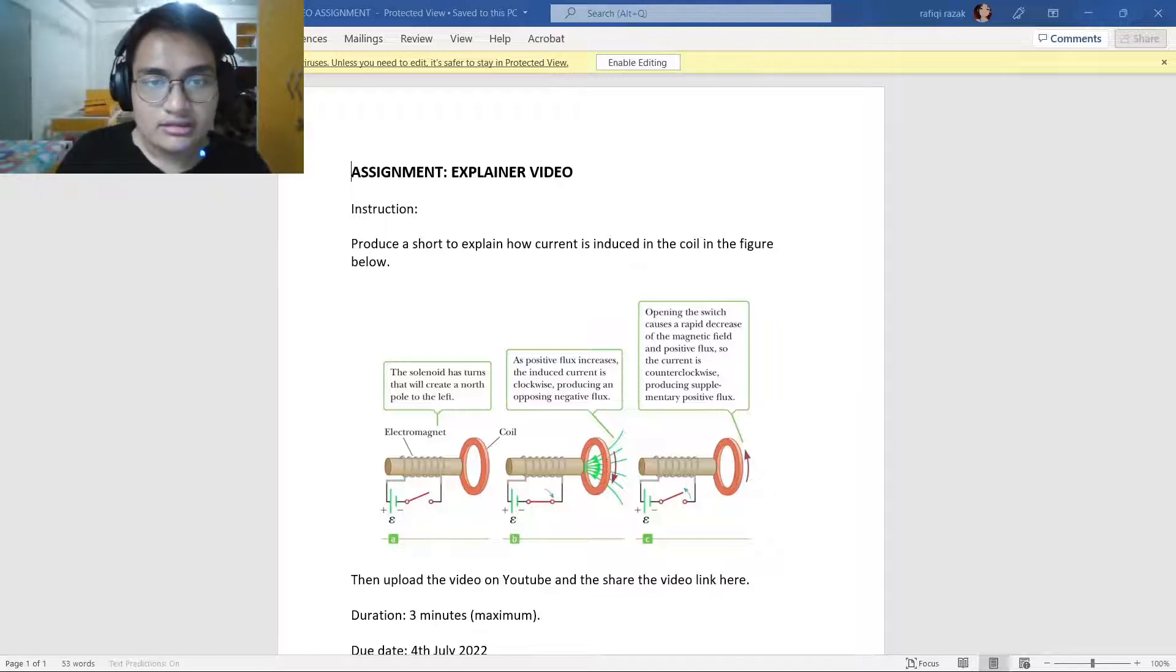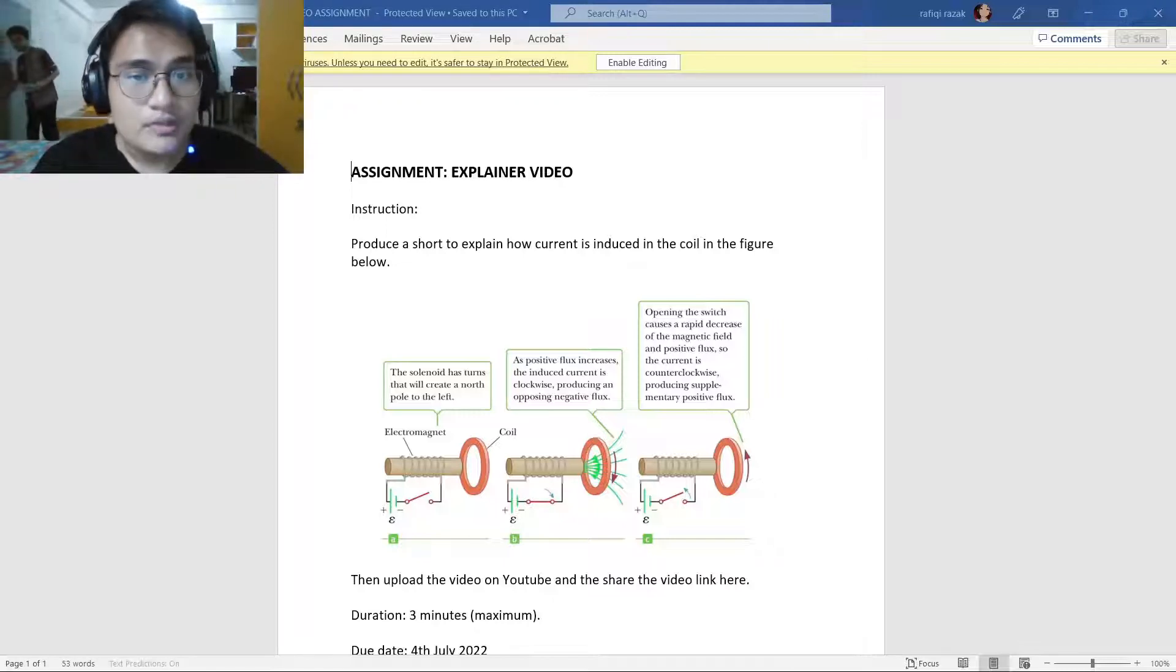turning the right hand so the thumb is pointed downwards. The right fingers can curl through the coil and to the right. The induced current in the coil follows the direction of the right thumb, which is clockwise as viewed from the left end of the coil.